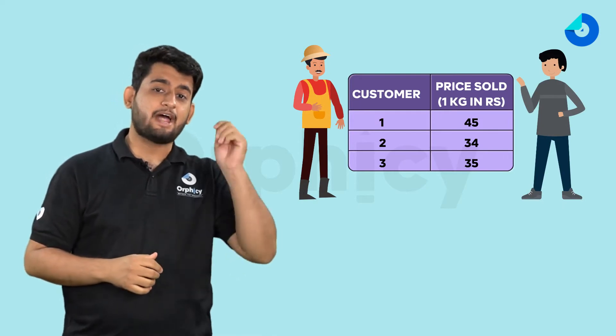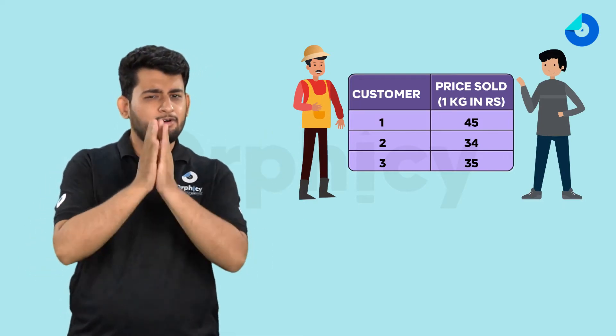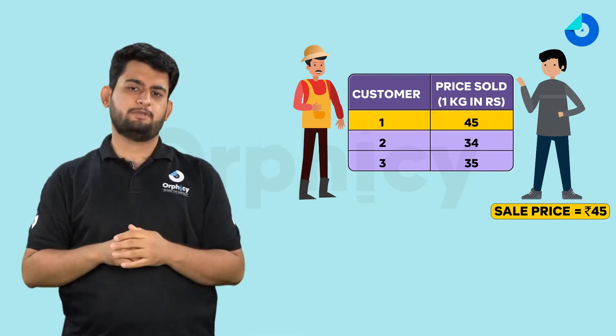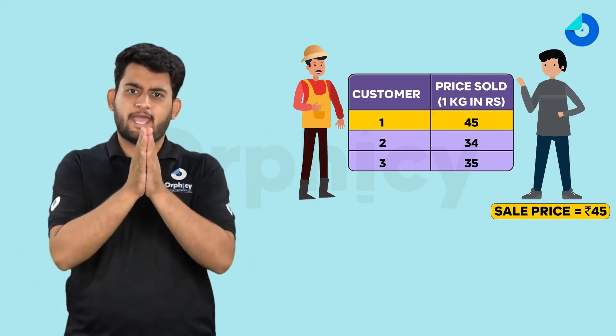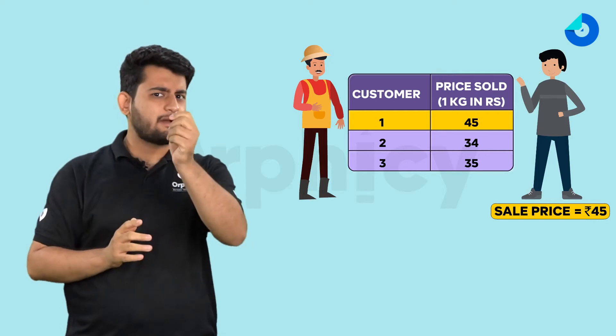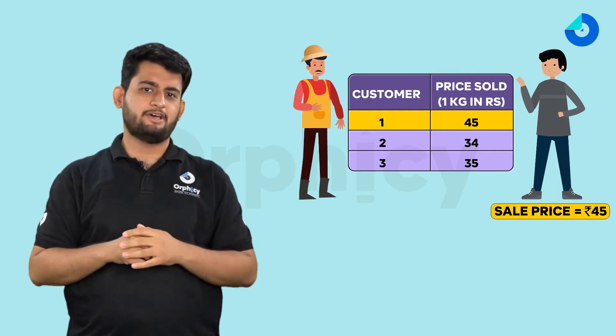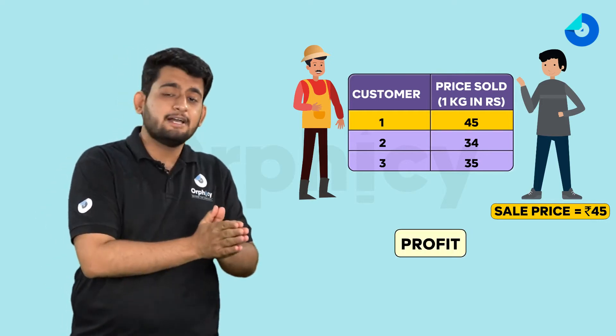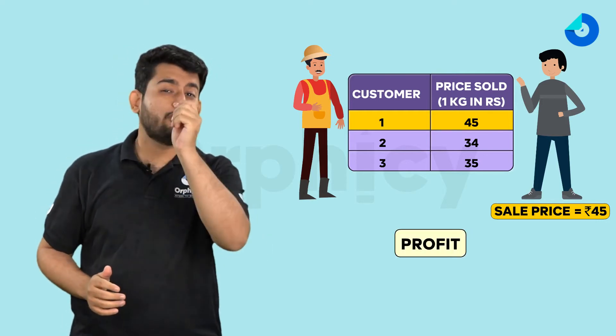The first customer bought 1 kg of potatoes from Ram Babu for 45 rupees. In such a situation, Ram Babu had a benefit. This benefit is actually called profit.